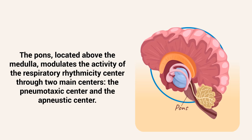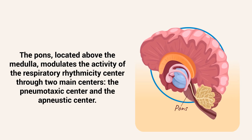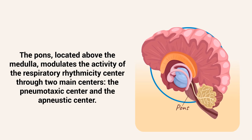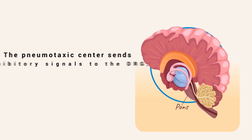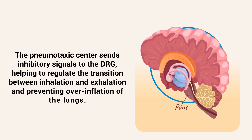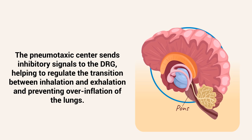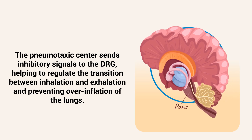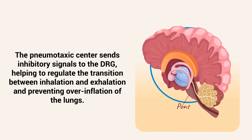The pons, located above the medulla, modulates the activity of the respiratory rhythmicity center through two main centers: the pneumotaxic center and the apneustic center. The pneumotaxic center sends inhibitory signals to the DRG, helping to regulate the transition between inhalation and exhalation and preventing overinflation of the lungs.